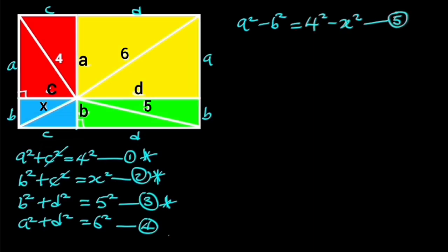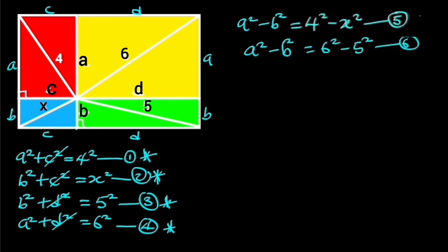Next, let's subtract equation 3 from equation 4. This will give us: A squared minus B squared is equal to 6 squared minus 5 squared. If we go ahead and substitute this into equation 5, we will have: 4 squared minus X squared is equal to 6 squared minus 5 squared.